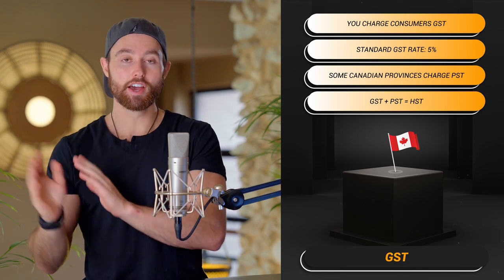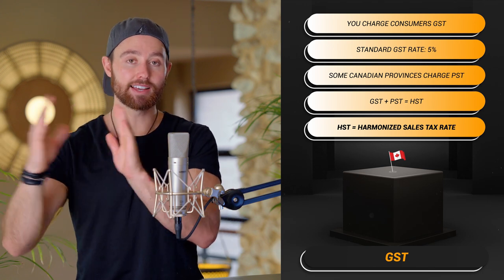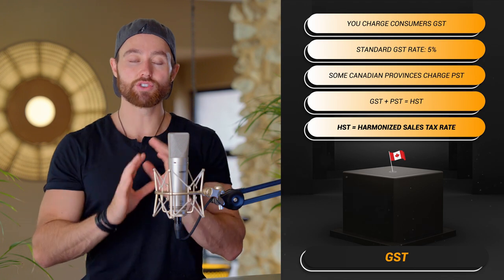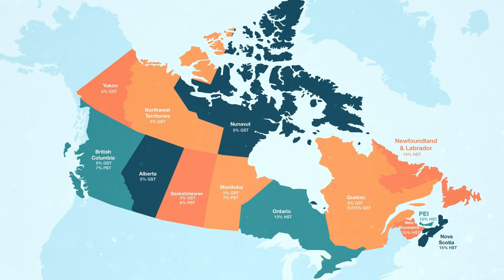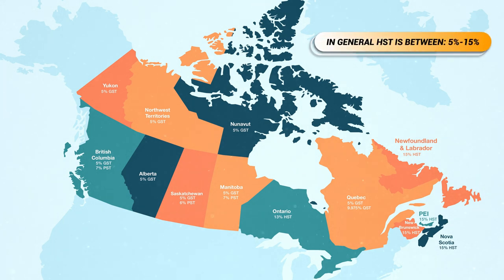So that is sales tax. Remember, it doesn't matter where you or your company are based — these are consumption taxes, so they're always going to happen. Now let's look at GST — goods and services tax — which is relevant if you sell in Canada. The standard rate in Canada is 5%, but some Canadian provinces also charge PST, provincial sales tax. When GST is added to PST, you get HST, the harmonized sales tax rate, and that generally sits between 5% and 15% of the sell price.